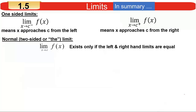This summarizes everything: approaching from the left gives the left-hand limit; approaching from the right gives the right-hand limit. If the left- and right-hand limits are equal to each other, then you have the overall limit, or simply 'the limit.'